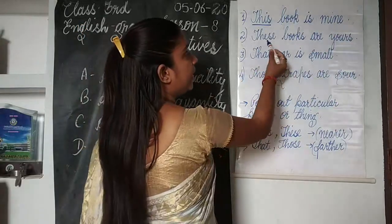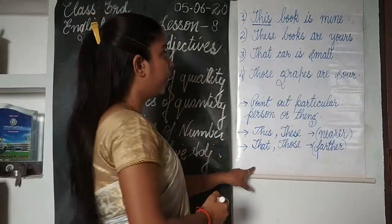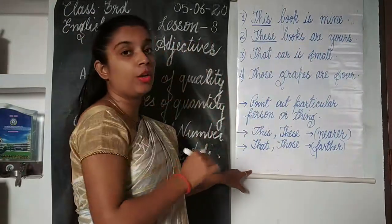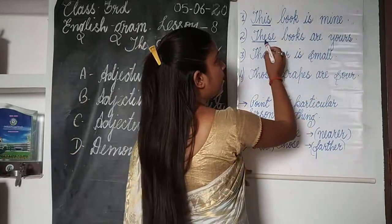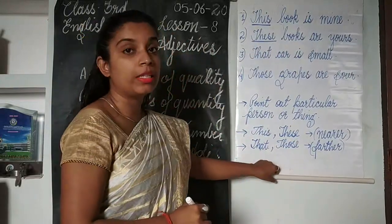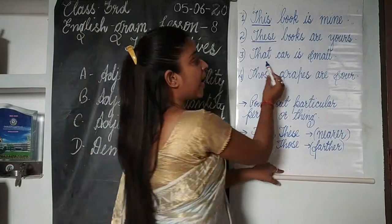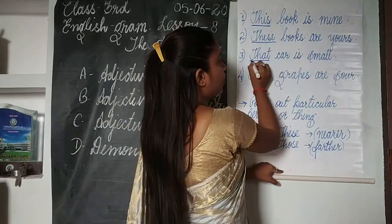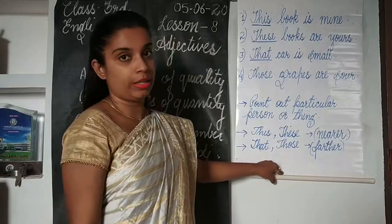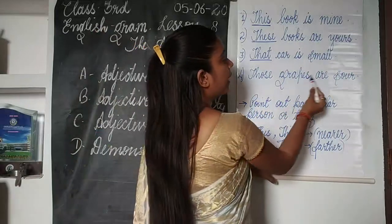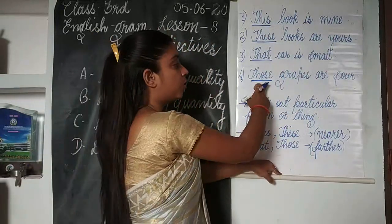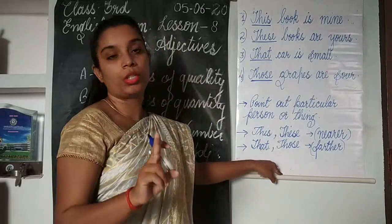The second sentence is: 'These books are yours.' The word 'these' is pointing out the books, and books is a noun, so 'these' is a demonstrative adjective. Third sentence: 'That car is small.' The word 'that' is pointing out the car, which is a noun, so 'that' is a demonstrative adjective. Fourth sentence: 'Those grapes are sour.' The word 'those' is pointing out at grapes, which is a noun, so 'those' is a demonstrative adjective.